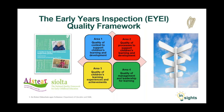The Early Years Inspection Framework is underpinned by Ashtar, the Early Childhood Curriculum Framework developed by the NCCA in 2009, and Sheilta, the National Quality Framework for Early Childhood Education developed in 2006. Both of these frameworks centre on providing high quality educational provision for children aged 0 to 6 years. The Inspection Framework consists of four interrelated areas, each of which has a number of associated outcomes.